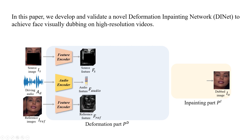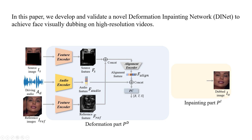The source image and reference images are input into two different feature encoders to extract source feature maps and reference feature maps. These are concatenated and input into one alignment encoder to compute alignment features. The audio feature and alignment feature are concatenated and input into fully connected layers to compute deformation parameters of rotation, translation, and scaling. Finally, Adaptive Affine Transformation is used to deform reference feature maps into deformed feature maps.